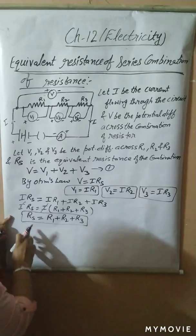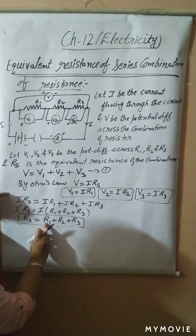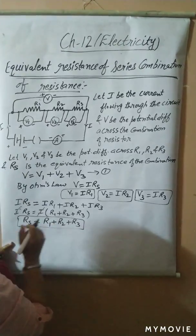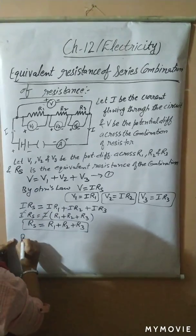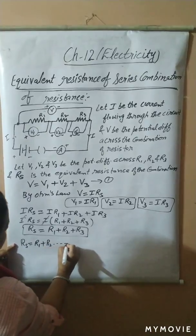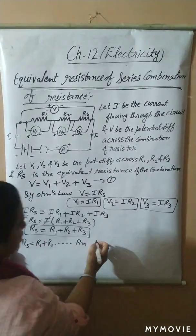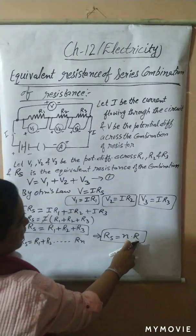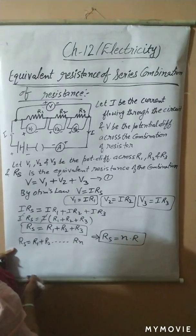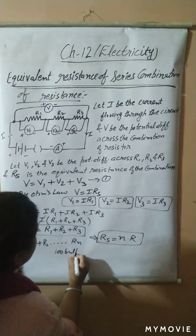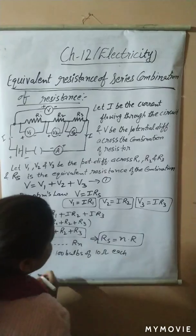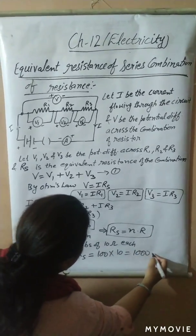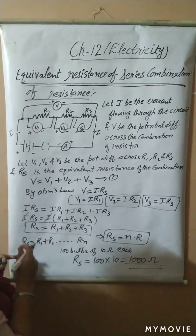Means the total resistance in series combination is the sum of individual resistances, that is R1 plus R2 plus R3. If you are having N resistors of the same value, then RS would be equal to R1 plus R2 up to Rn, and when they are all identical, RS equals N times R, where N is the number of resistors and R is the value of each resistor. For example, if I am having 100 bulbs of 10 ohm each connected in series, RS equals 100 times 10, so the resistance would be 1000 ohm.